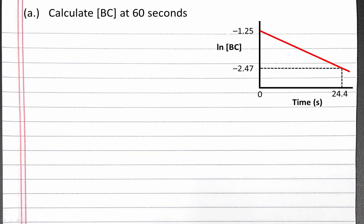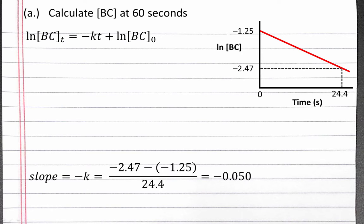First, we'll calculate our concentration of BC at 60 seconds. Since the natural log of BC plotted versus time is a straight line, this is a first-order reaction with respect to BC. Our integrated rate law for a first-order reaction states that the natural log of our concentration of BC at time T is equal to negative K (our rate constant) times time, plus the natural log of our initial BC concentration. From the graph, we can get our slope, which is equal to negative K.